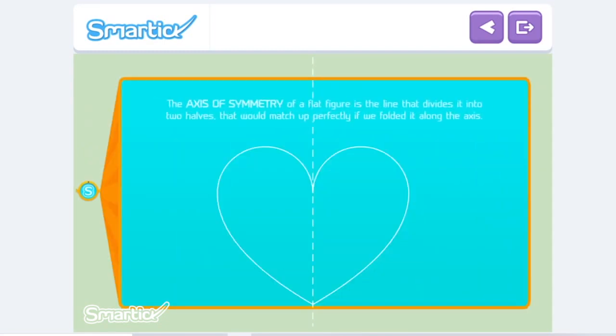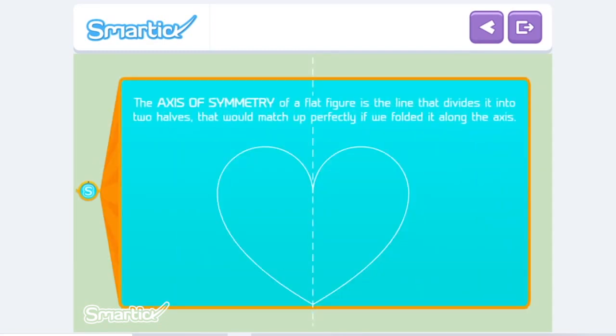We call axis of symmetry of a flat figure a line that divides it into two halves that would match up perfectly if we fold it along the axis.